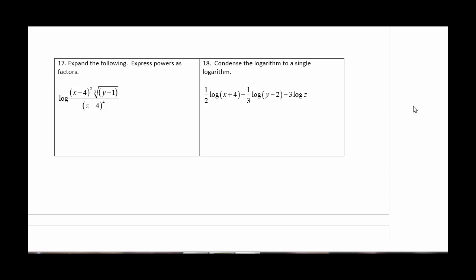17 and 18, we are just practicing expanding and condensing. So in 17, we want to look for any of our exponents will come out in the front of the log, and we want to look for any multiplies and divides. So the fact that I've got x minus 4 squared means I'm going to bring that out as 2 log of x minus 4.